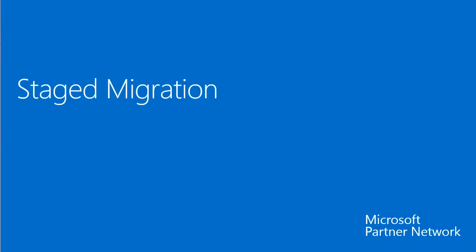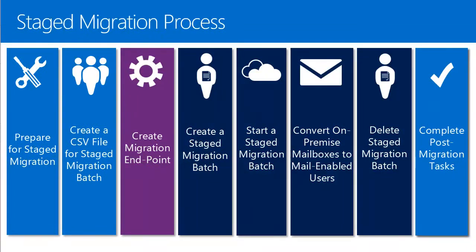Last but not least, let's talk about the staged migration, which is actually a mix of IMAP and cutover migration. In the overall staged migration process, we start with preparation. You can see a migration endpoint created in the purple box. Dark blue boxes mark migration batches. You have the possibility to create multiple batches, so you can move users in groups to the cloud — not everyone in one step, but progressively.